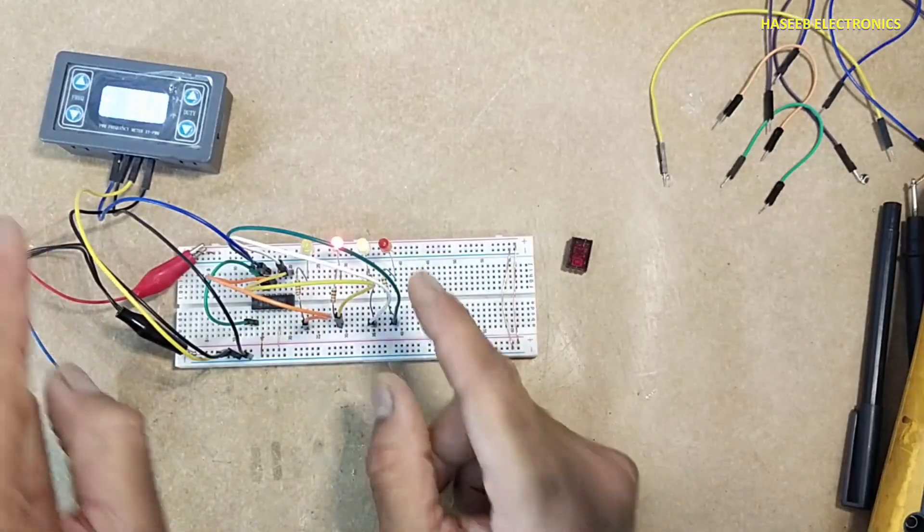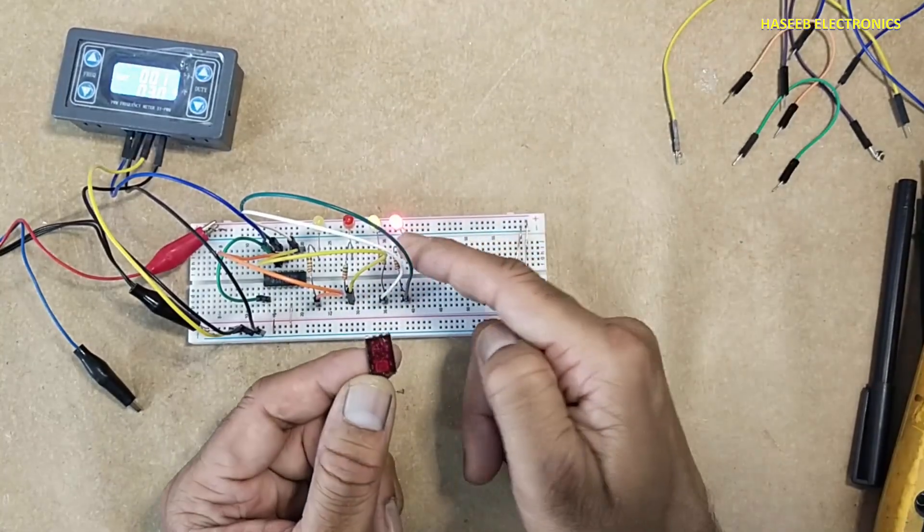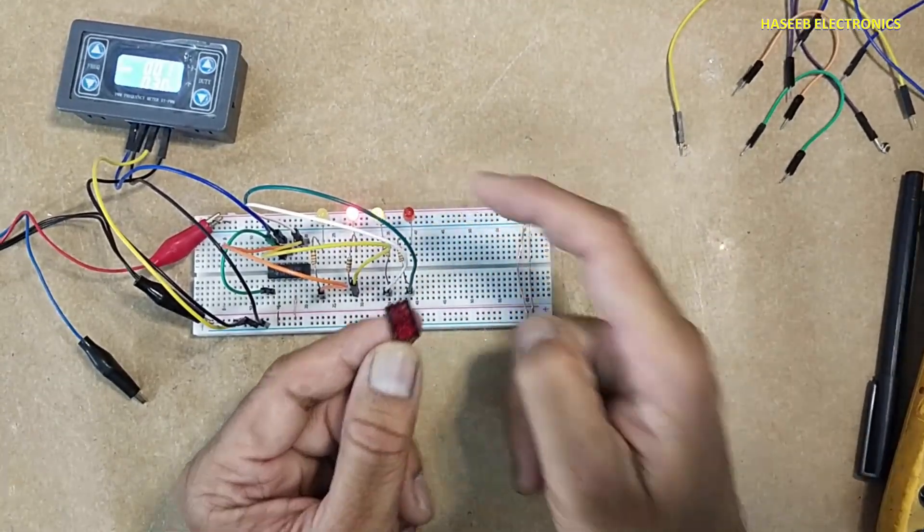Boundary counter - it counts the boundary and provides hexadecimal output. Today we will display these numbers which are coded on this hexadecimal display.